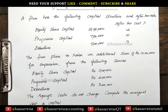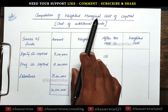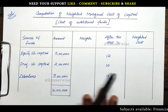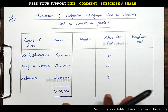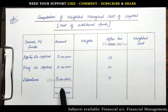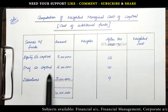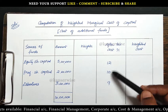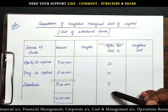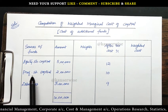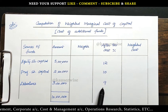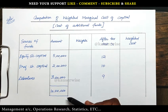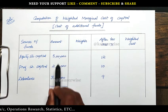Now let's see the solution. Computation of weighted marginal cost of capital. Marginal cost of capital means the cost of additional funds. The additional capital required is 10,00,000, sourced from: equity 5,00,000; preference 2,00,000; debentures 3,00,000; total 10,00,000. The after tax costs taken from the existing capital structure are: equity 12%, preference 10%, debentures 9%. First, we need to find the weights — the proportion — for each component.